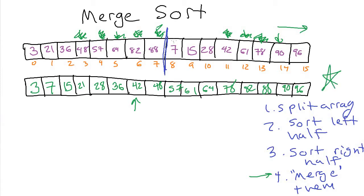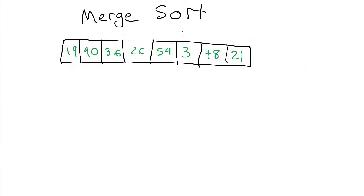The trick, of course, is that we use the same process to do the left and right half sorting, and the magic of recursion is that it just works. Let's go through another quick example where we drill down into the smaller pieces all the way to the bottom. I'll do it with a smaller array of just size eight.